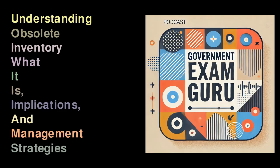Understanding Obsolete Inventory: What It Is, Implications, and Management Strategies. Obsolete inventory is a term used in inventory management to refer to goods that have reached the end of their product life cycle. This could be due to various reasons such as changes in consumer preferences, technological advancements, or simply market saturation. Such inventory has typically not been sold or used for an extended period and is not expected to generate any sales in the future. Companies may categorize obsolete inventory as dead inventory or excess inventory.